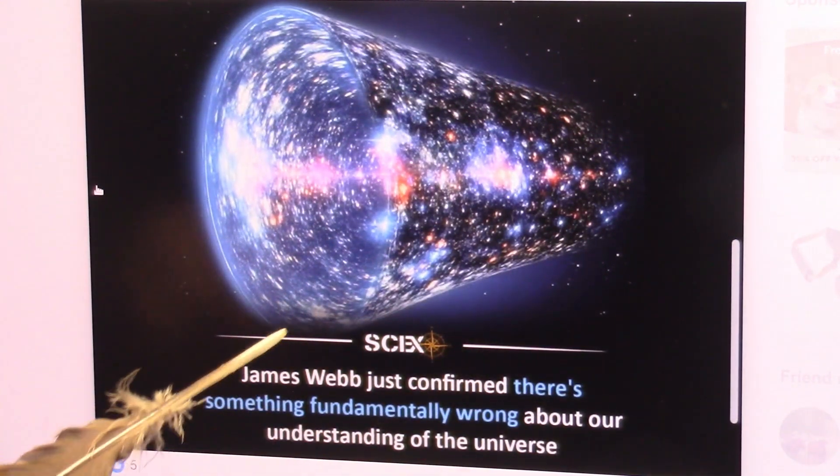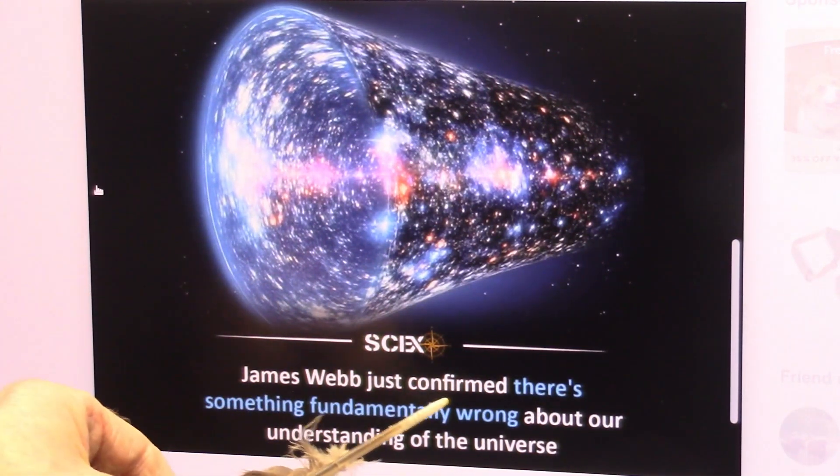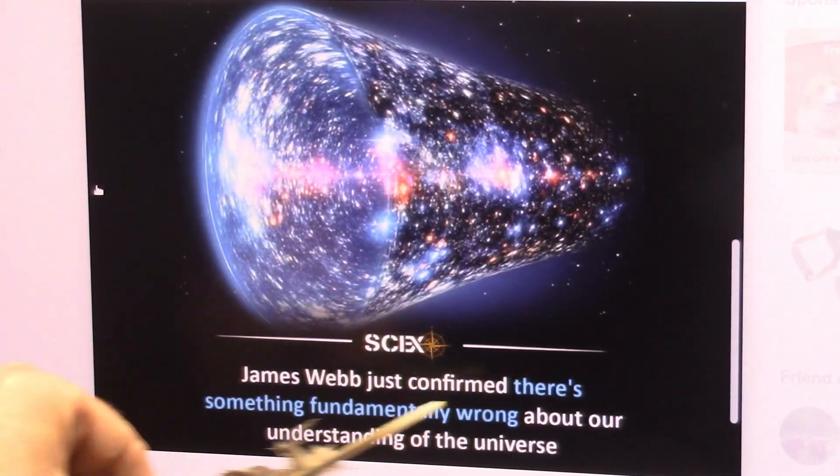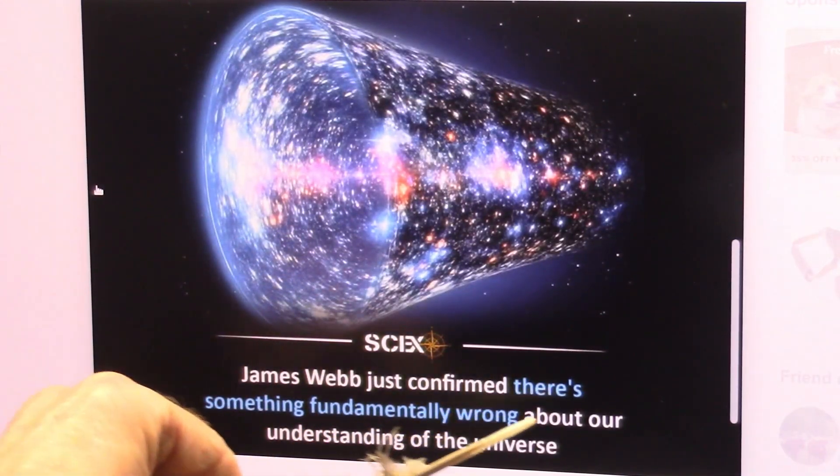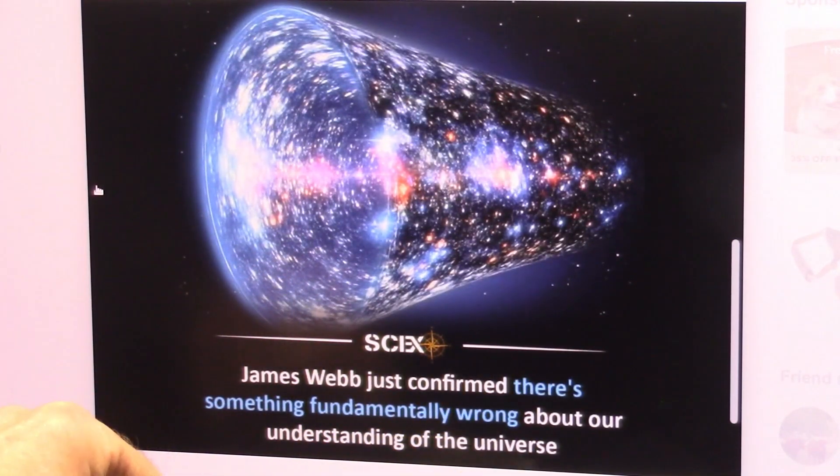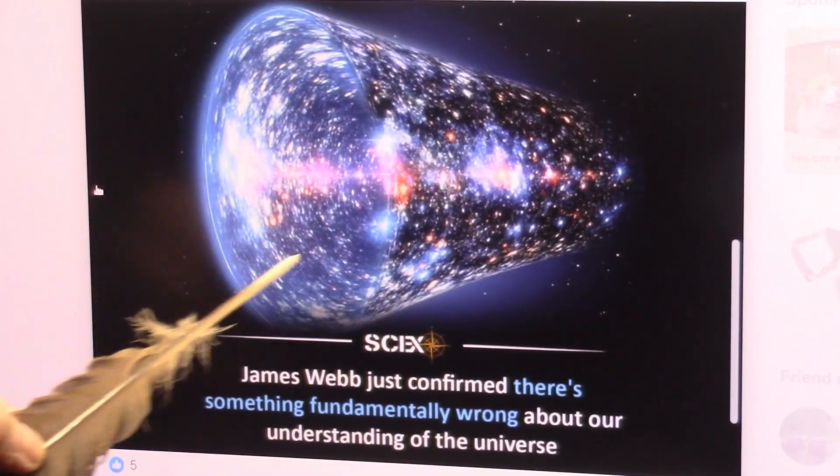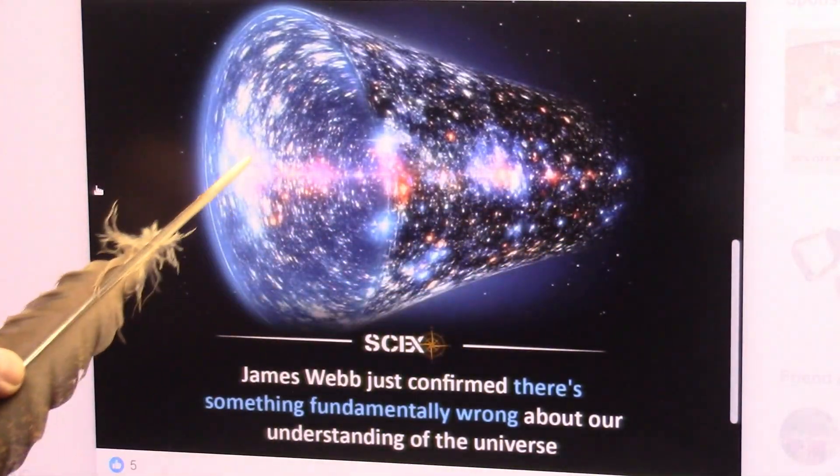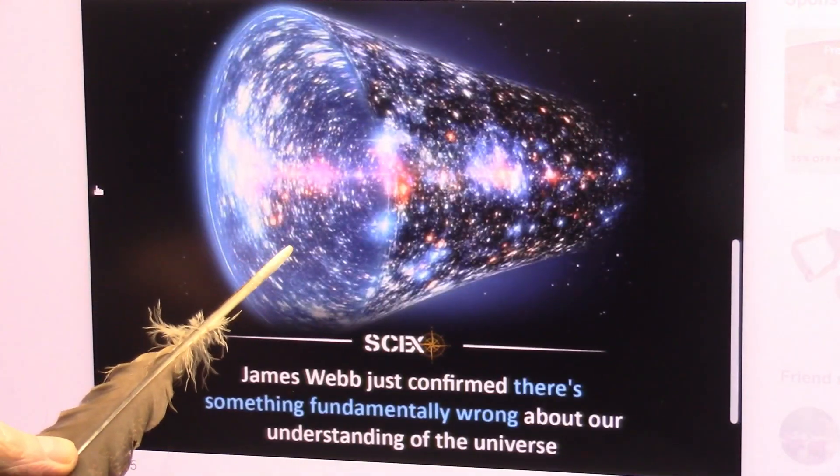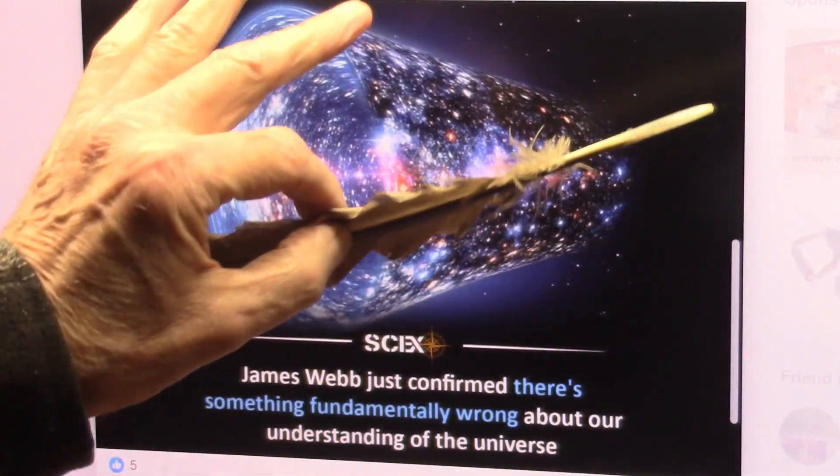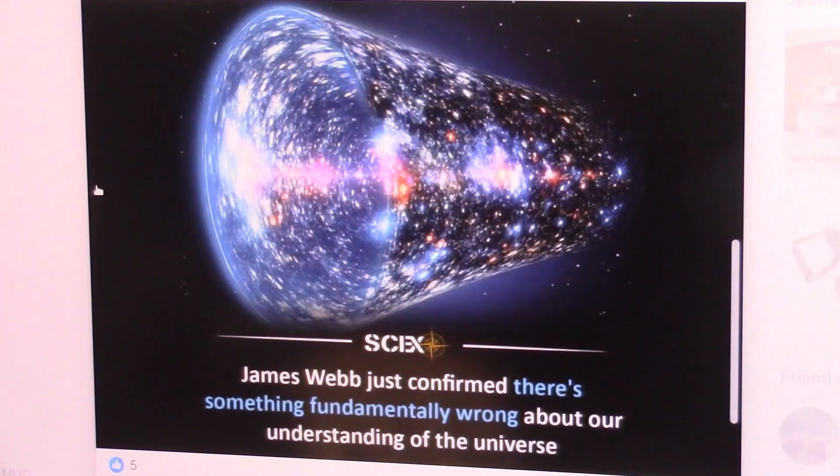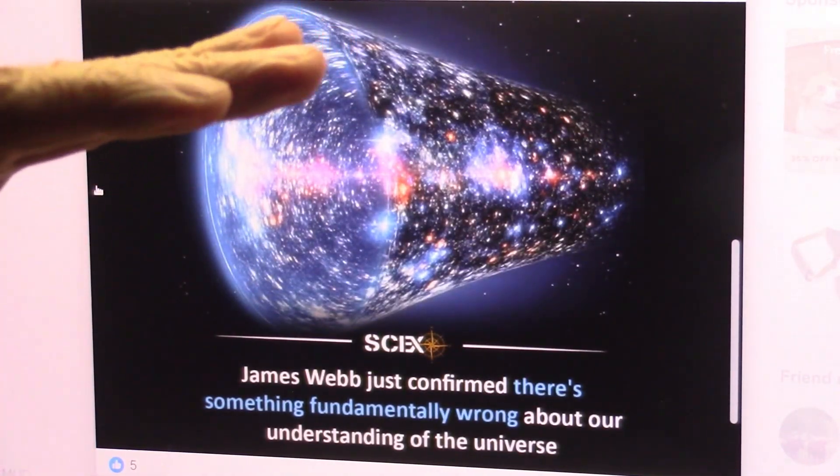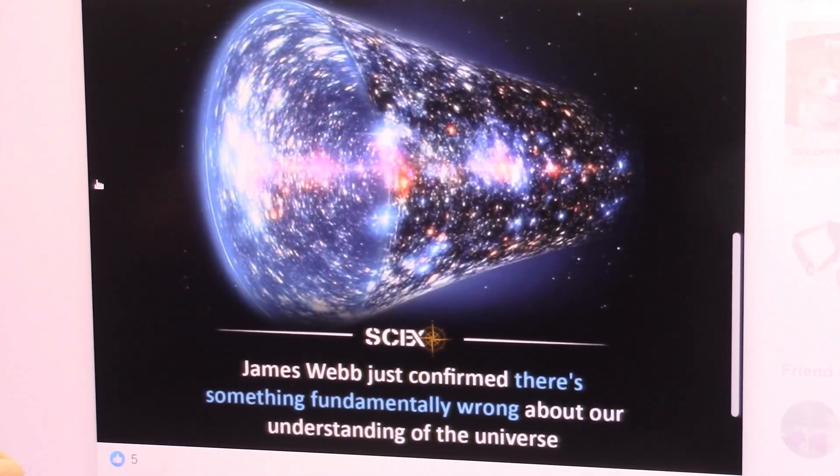This is a problem. James Webb just confirmed, this is a telescope, confirmed there's something fundamentally wrong about our understanding of the universe. There's something fundamentally wrong about our understanding of light. Light does not go the same speed forever. When it hits fields, it slows down. No question whatsoever, and there is just a ton of fields in space.